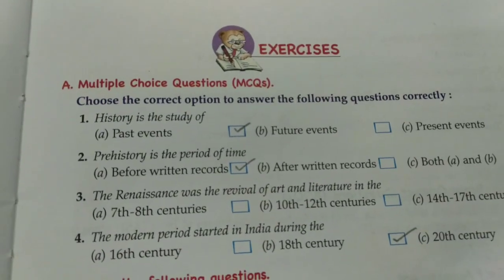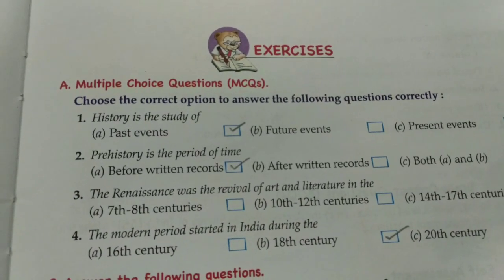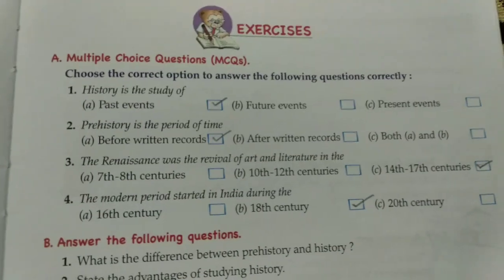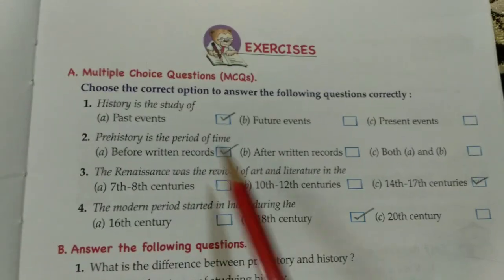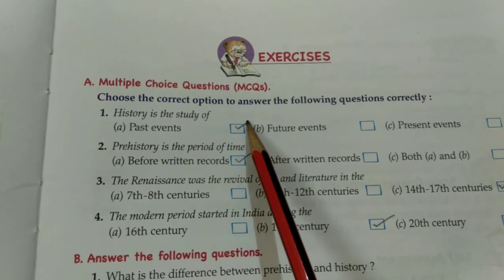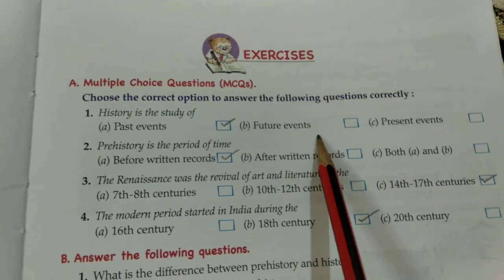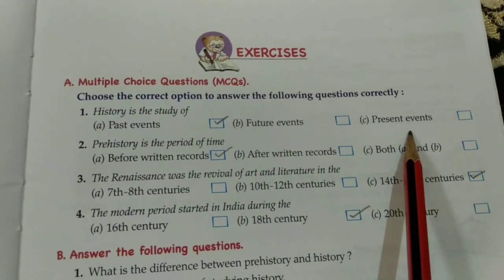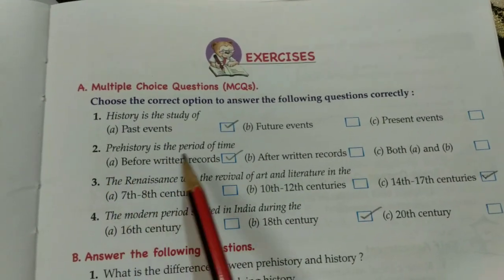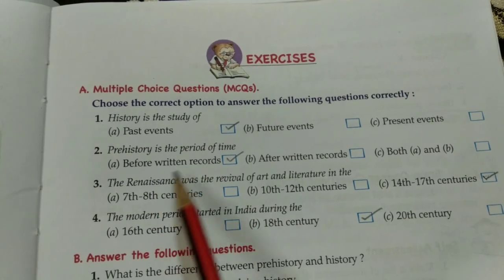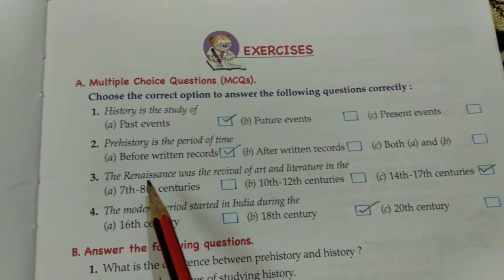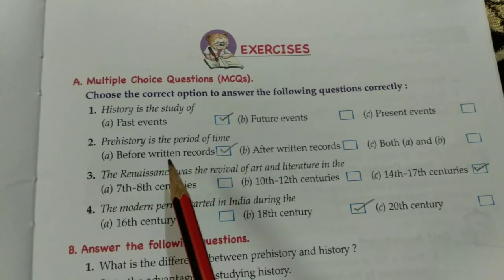Exercise A: Multiple choice questions. First — history is the study of. There are three options given, and the answer is past events, because the future we don't know and the present we are just living. So history is the study of the past. Pre-history is the period of time before written records, so that will be your correct answer.